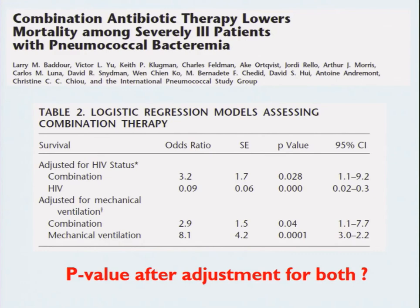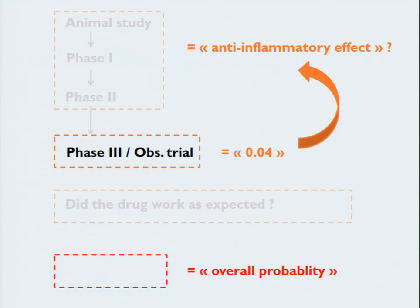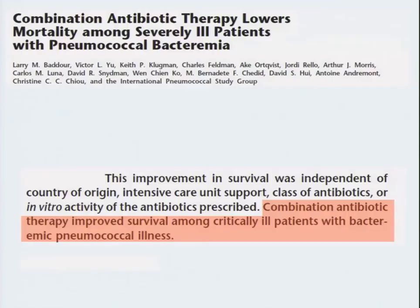Here you can already see that the combination is borderline significant — no longer 0.01. Here it's 0.04. I can tell you that if you take both differences together, it will no longer be significant — because there will not be a high correlation between mechanical ventilation and HIV status, so both adjustments will be independent. If there were a high correlation, you could potentially accept that one adjustment is enough, but here I'm pretty sure it will not be significant. So we start with 0.04, and we do not know if it is true. And they claim the effect is anti-inflammatory — but did they prove that? Did they check during the trial that there was an anti-inflammatory effect? No. So the overall probability is much higher than 0.04.